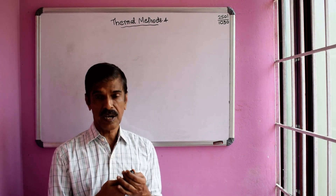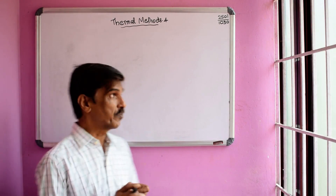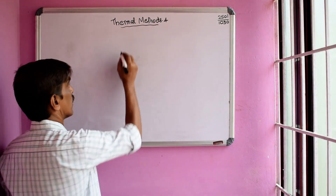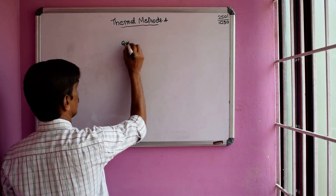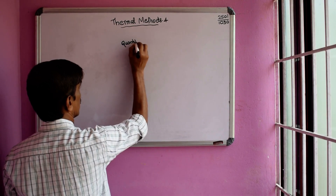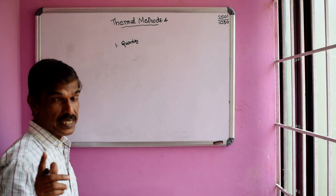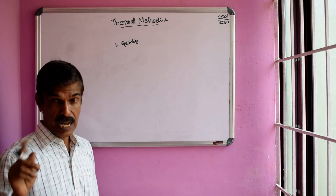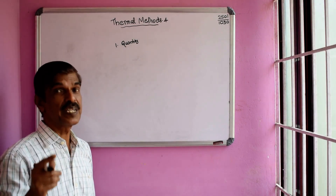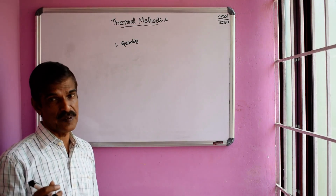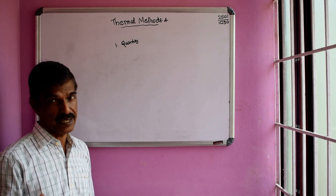This is the thermogravimetry curve shape. The TG curve shape depends on the sample quantity and characteristics, as well as the instrumental factors such as the sample holder and so on.